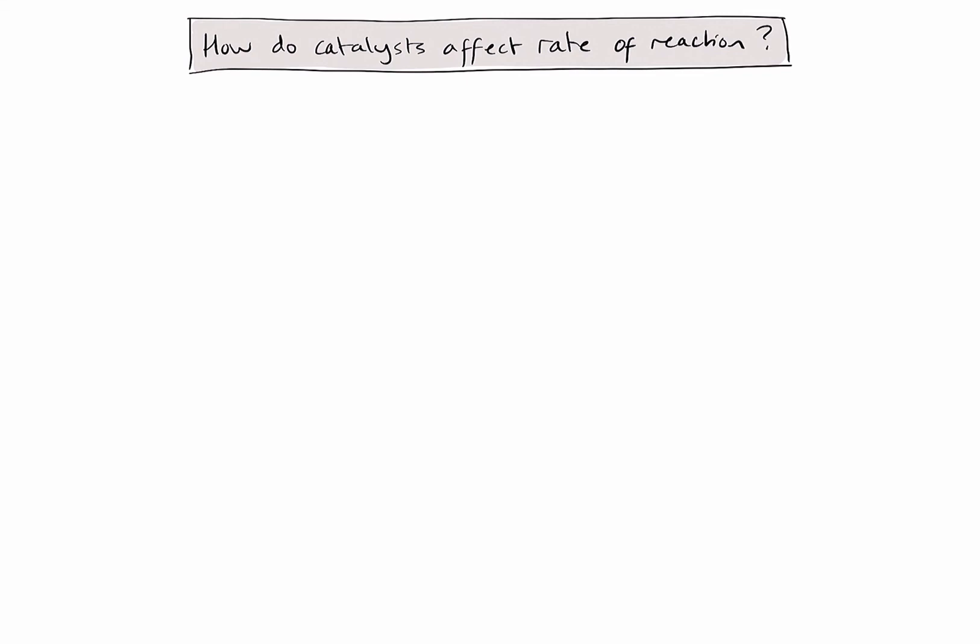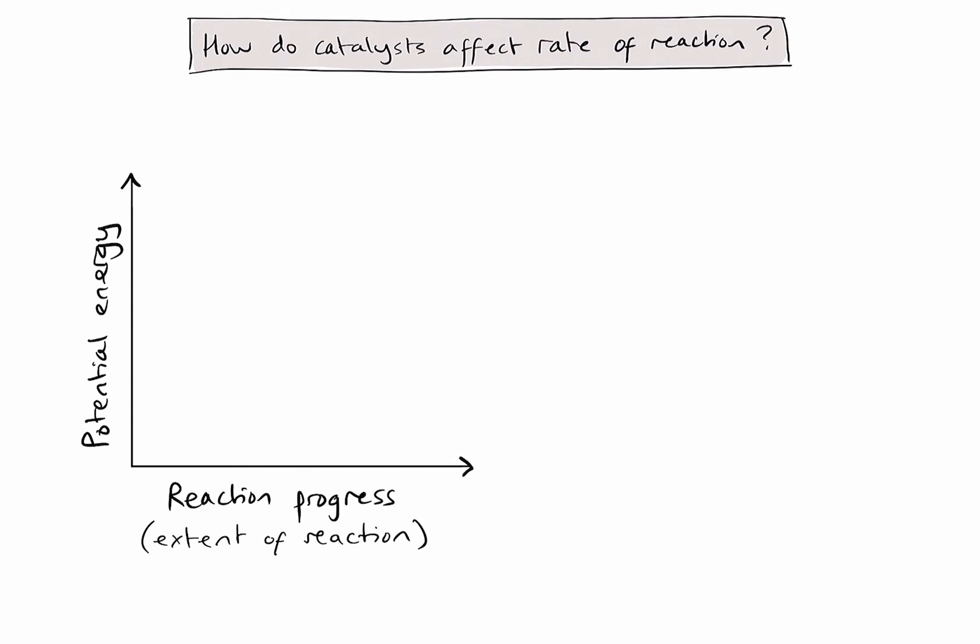In order to understand how catalysts affect the rate of reaction, it's useful to draw a reaction energy profile, or potential energy diagram. On a reaction energy profile, the y-axis represents potential energy, and the x-axis represents reaction progress, or the extent of the reaction. Let's consider an exothermic reaction, where the potential energy of the products will be lower than the potential energy of the reactants.